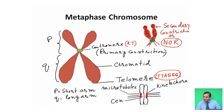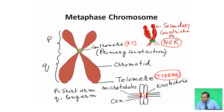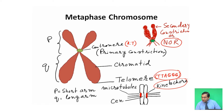In the centromeric region, a protein called the kinetochore is present. The kinetochore is a proteinaceous substance into which microtubules are implanted, and it helps in chromosome movement.